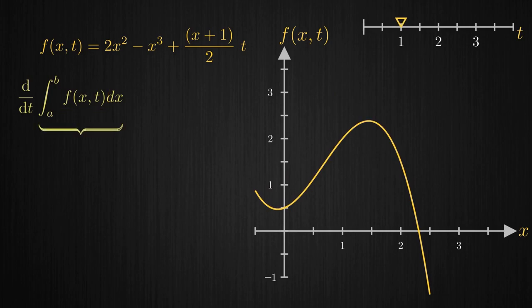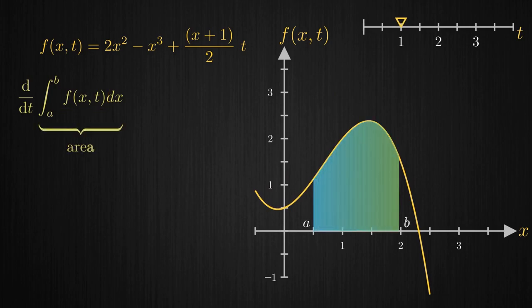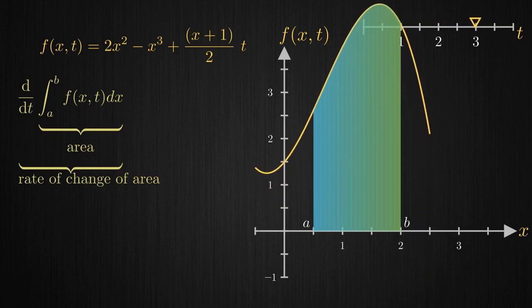Then we see an integral of this function representing the area under the curve within the given limits. And then we have the derivative of this integral with respect to t which represents the rate at which the area under the curve itself changes with respect to t.